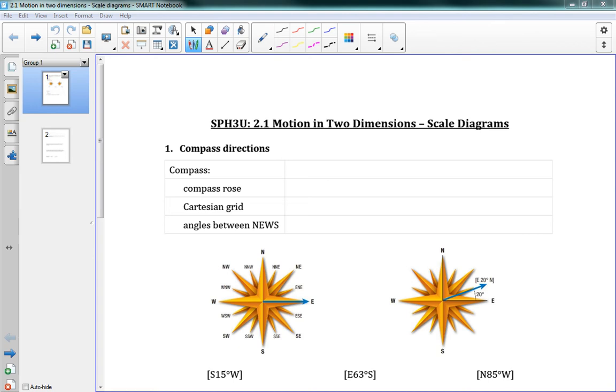Hello, and welcome to 2.1, Motion in Two Dimensions. This is the start of Chapter 2, and Chapter 2 is all about two-dimensional motion. In Chapter 1, we looked at how to solve problems using acceleration all in one direction, so forwards, backwards, up, down, but we always stayed in one dimension, and now we're looking at combining two dimensions.